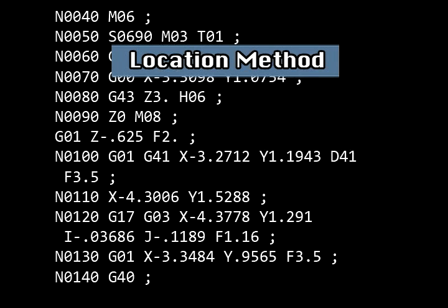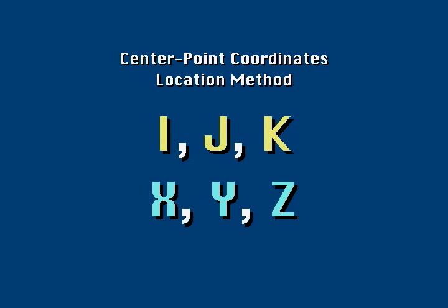The location method uses two center point address words to specify the location. These two words will use a combination of I, J and K addresses.